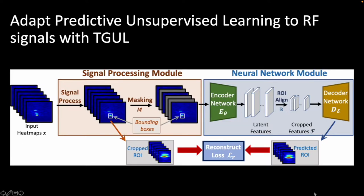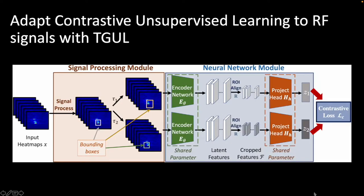The reconstruction loss between the cropped ROI of the input and the predicted ones is used to train the model. We also adapt contrastive learning to RF signals with TGUL. After the signal processing step, different transformations are applied to the bounding boxes to generate positive samples.